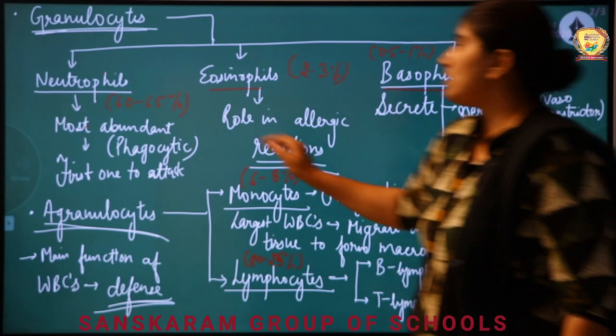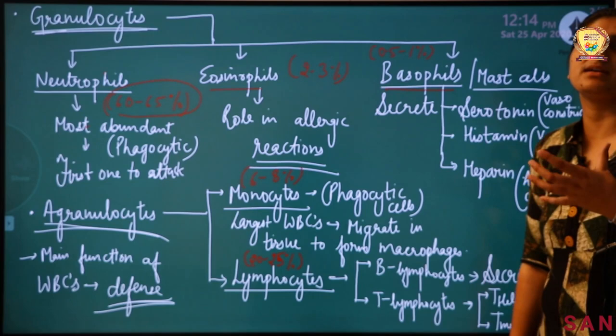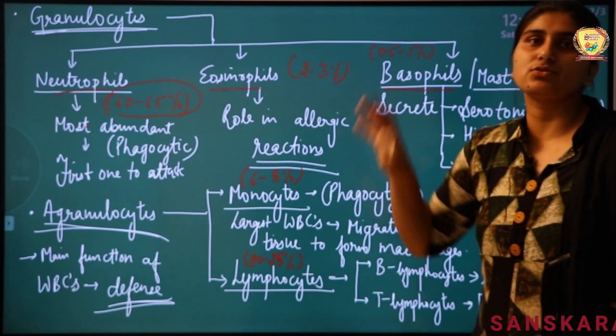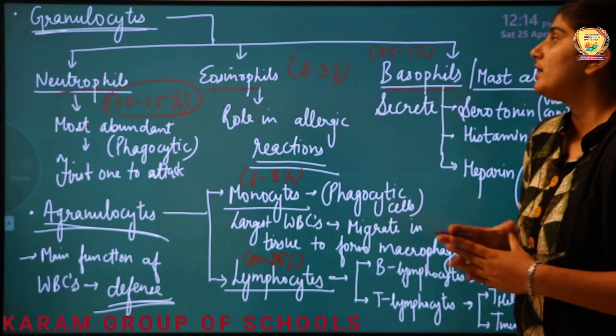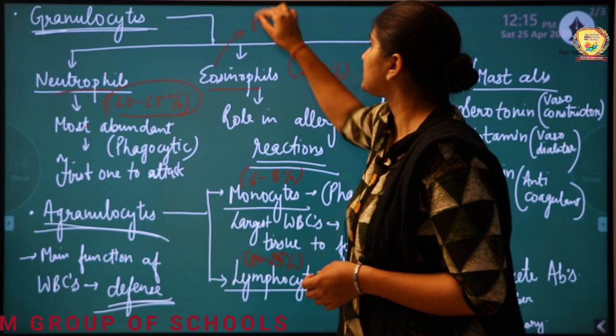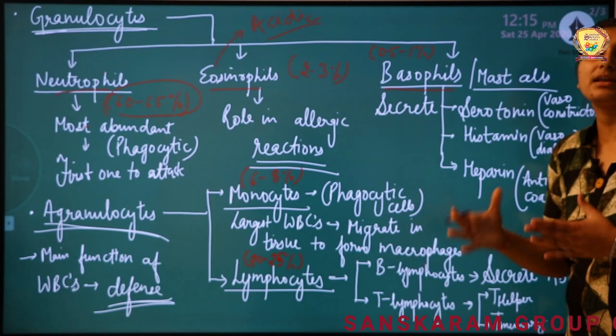Now, among all total WBCs in blood, neutrophils are the most abundant. Among all blood cells, RBCs are most abundant overall; but among WBCs specifically, the most abundant are neutrophils — 60 to 65% of WBCs are neutrophils. Looking at the names: neutrophils, eosinophils, and basophils — neutral means neutral, eosino means acidic, and baso means basic.